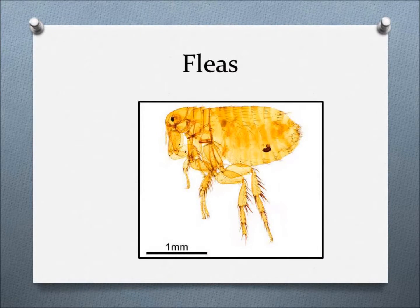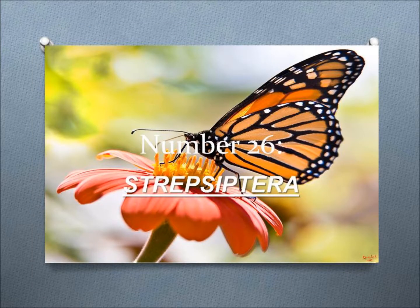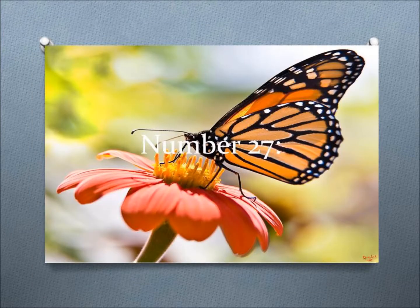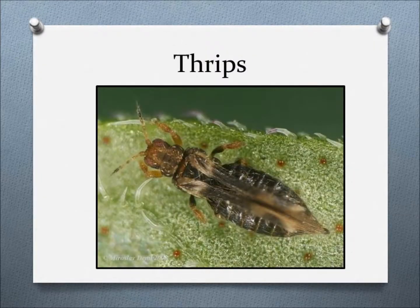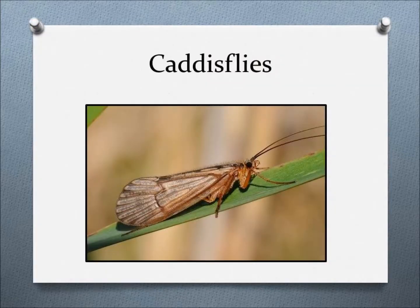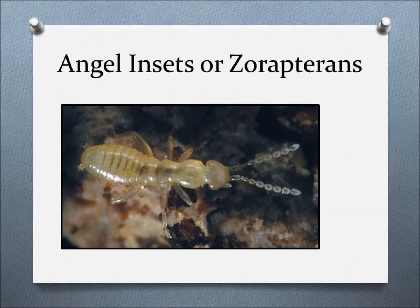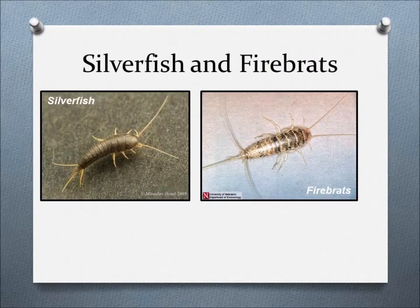Number 26: Strepsiptera — example: Twisted-Wing Parasites. Number 27: Thysanoptera — example: Thrips. Number 28: Trichoptera — example: Caddisflies. Number 29: Zoraptera — example: Angel Insects or Zorapterans. Number 30: Zygentoma — example: Silverfish and Firebrats.